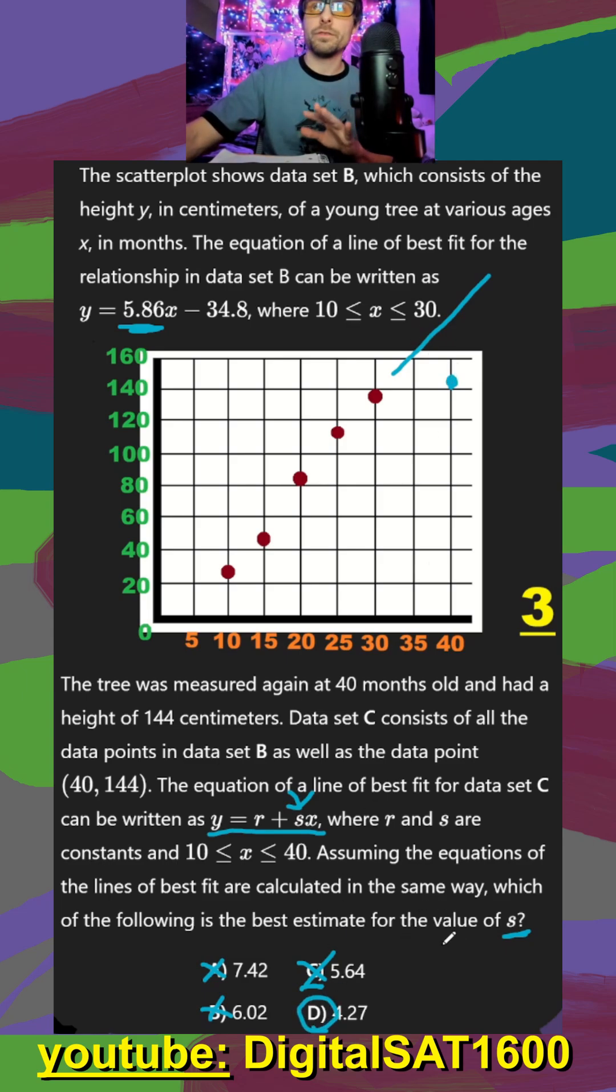But again, feel free if you're uncomfortable with these two answers, you can plot all six of these points in a table, and you still will get 4.27 as your slope.